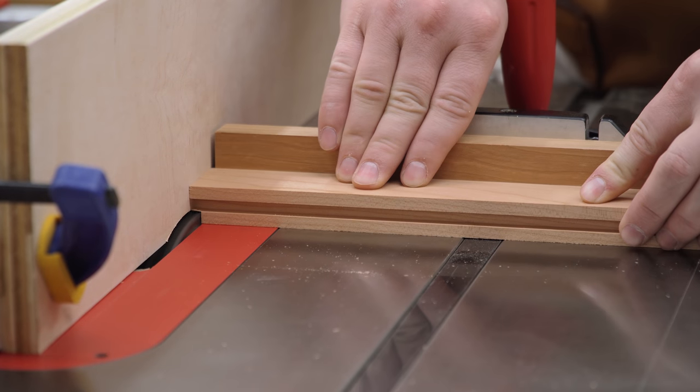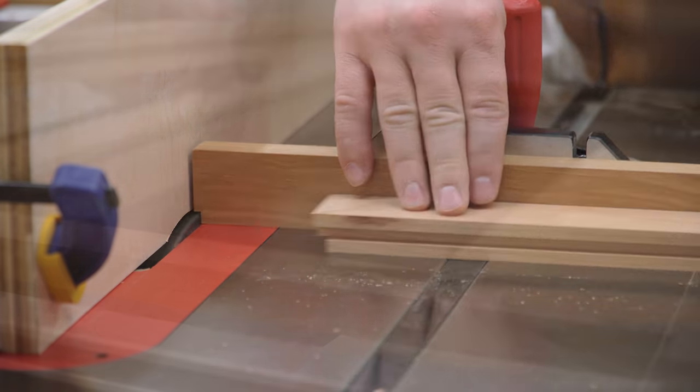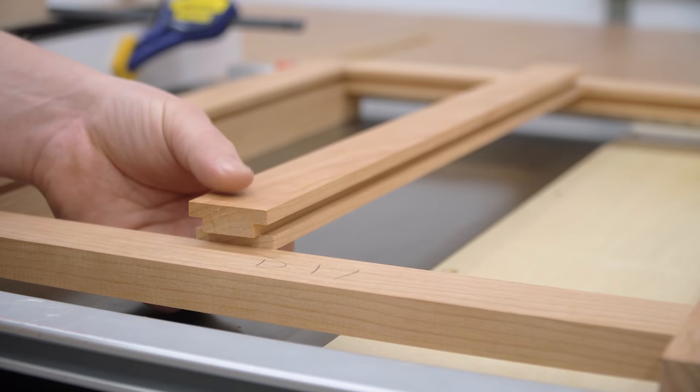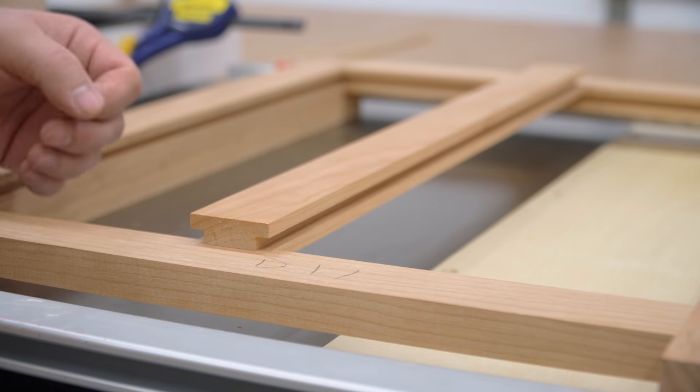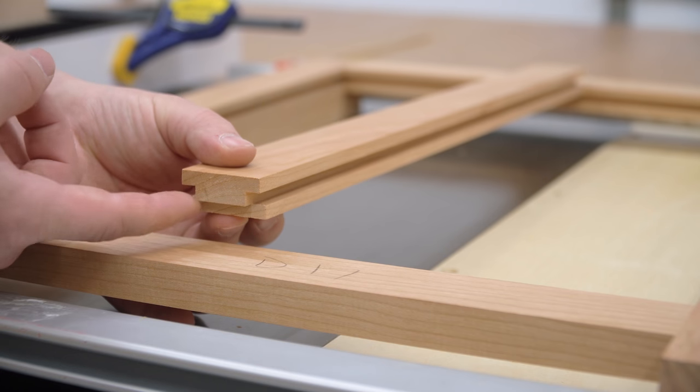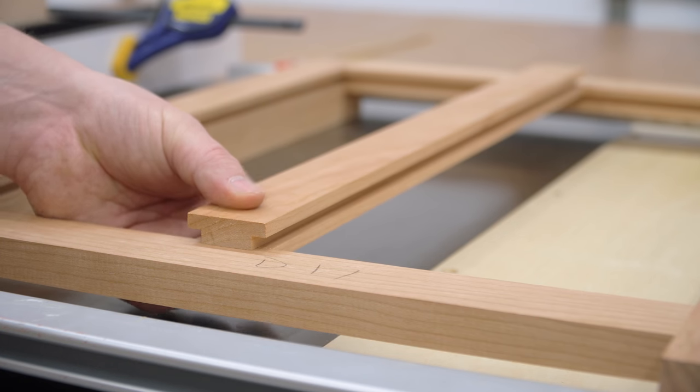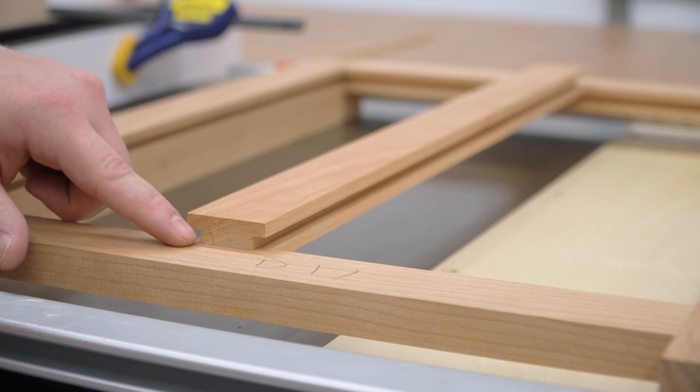With everything dialed in for the first half of the tongue, I'll go ahead and cut both ends of the board. After moving the fence twice, we've arrived at the perfect fit. Now that this is dialed in, I'm going to make these cuts on all of my stile pieces, and then we'll repeat the process for the top part of the tongue.